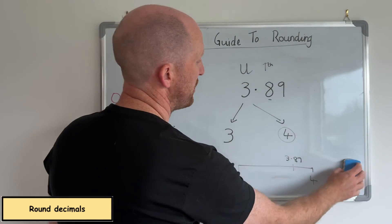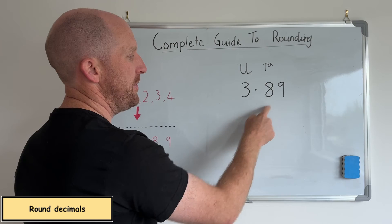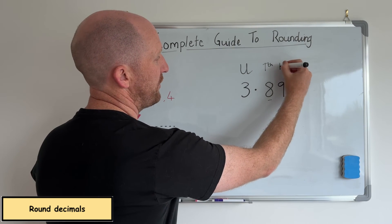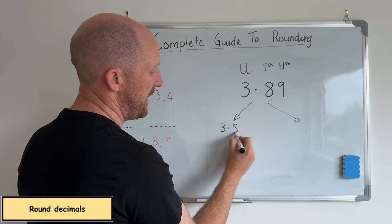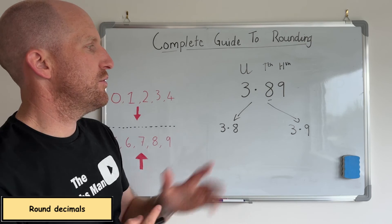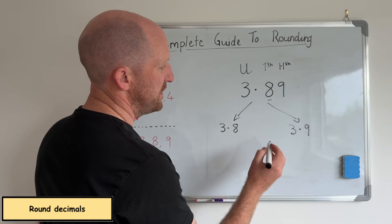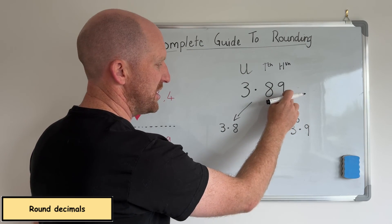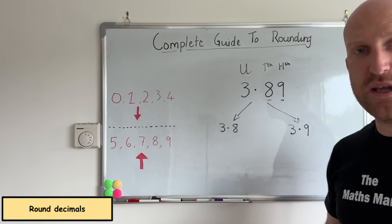Now we're going to round the same number, 3.89, but this time to the nearest tenth. We have the units, the tenths, and the hundredths. The two possible answers are 3.8 or 3.9. To decide, we look at the next digit — the hundredths — which is a 9. Since 9 is 5 or above, we round up. So 3.89 rounded to the nearest tenth is 3.9.